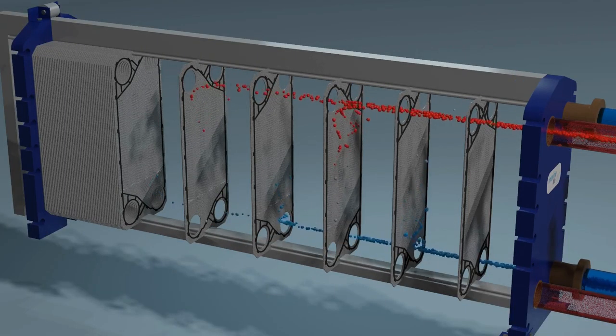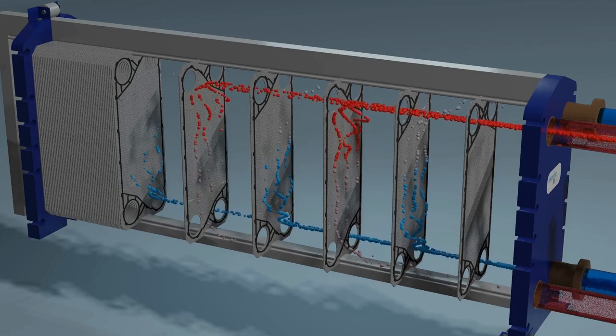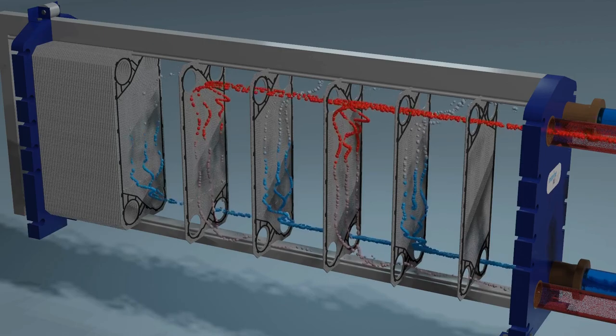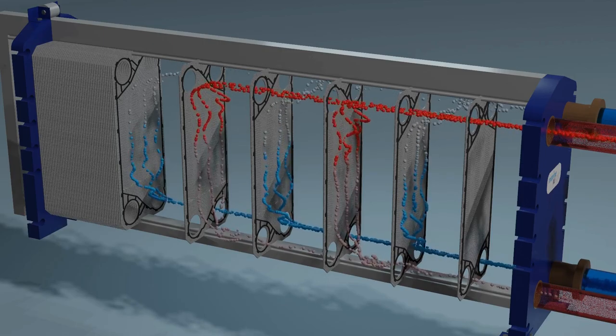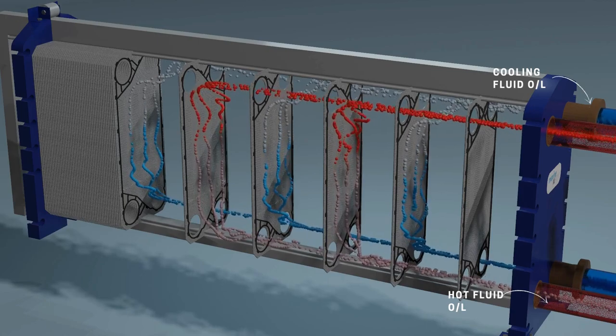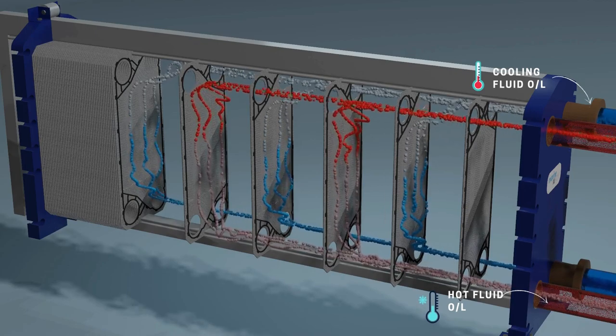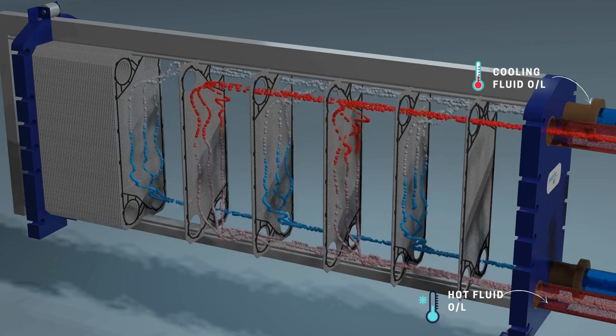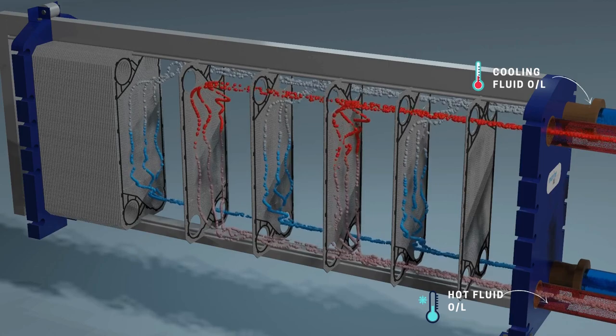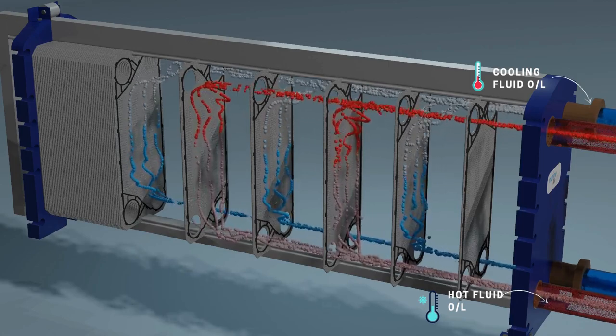As the hot fluid flows through the channels, it gives off heat to the metal plates. The cold fluid absorbs the heat from the metal plates as it flows through the channels. The two fluids exit the heat exchanger through separate outlet ports. The hot fluid is now cooler and the cold fluid is now warmer. The heat transfer process continues as long as the two fluids flow through the heat exchanger.